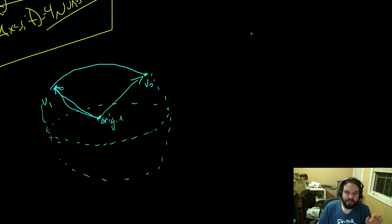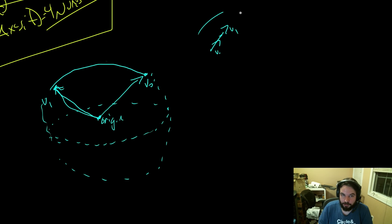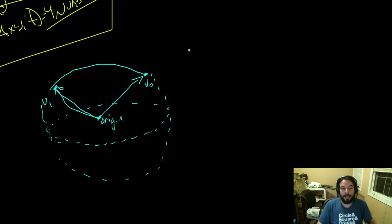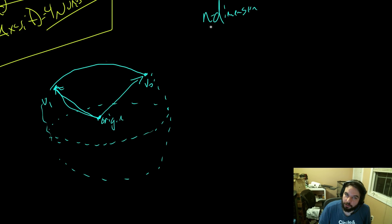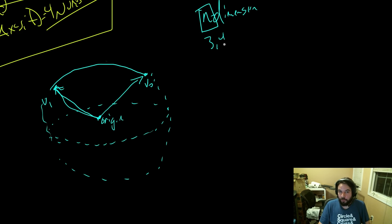Any two vectors that are non-collinear define a plane. As long as they're linearly independent — if they don't lie directly on top of each other — literally any two vectors define a plane. The cool thing about any n-dimensional sphere, whether three-dimensional, four-dimensional, or seven-dimensional — I know it works in three, four, and seven. We only care about three and four, so we know it works.